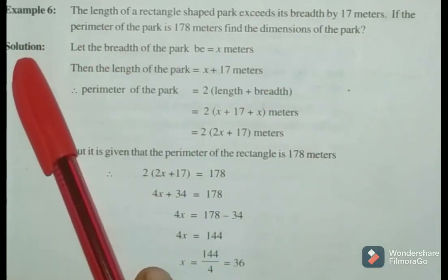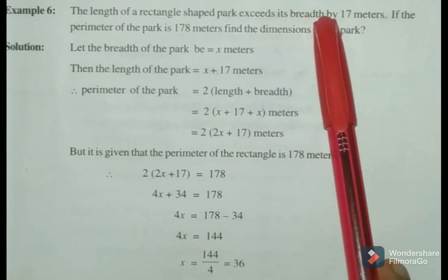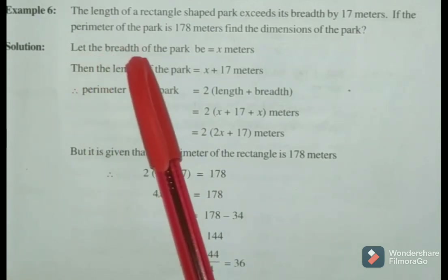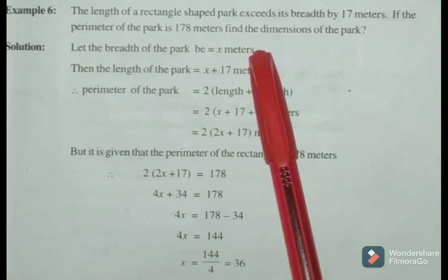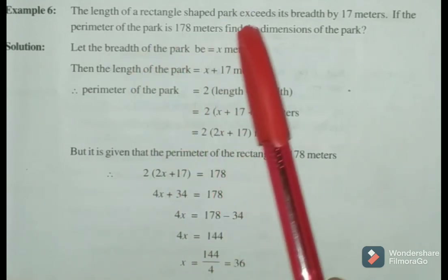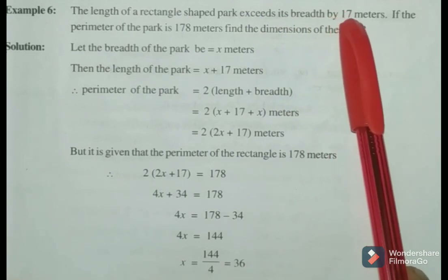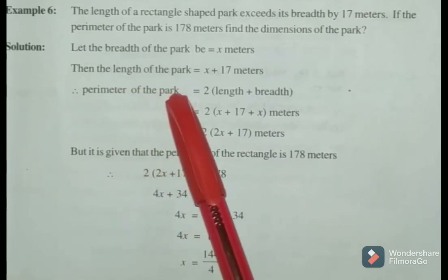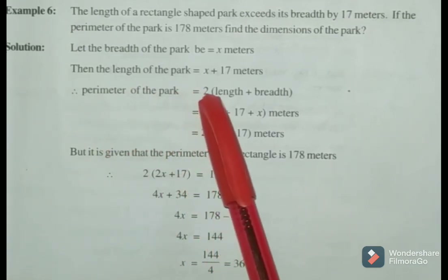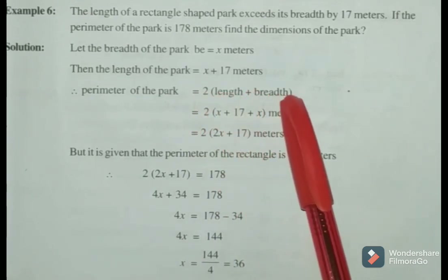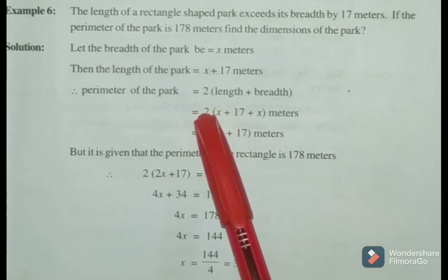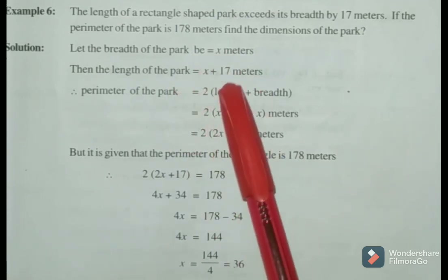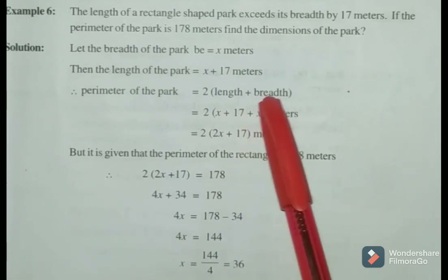Solution: Let the breadth of the park be X meters. Then the length of the park is X plus 70 meters. The perimeter of the rectangle formula is 2 into length plus breadth, so perimeter equals 2 into X plus 70 plus X, which is 2 into 2X plus 70.